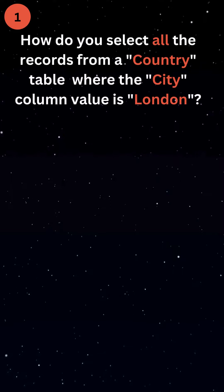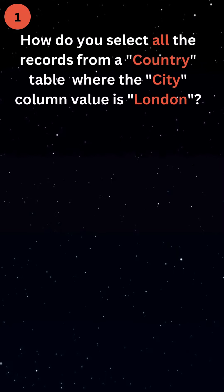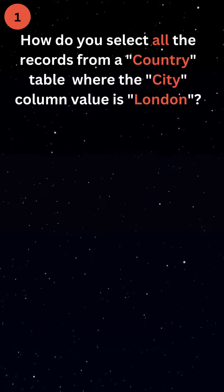How do you select all the records from a country table where the city column value is London?